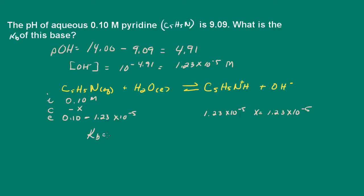So let's go ahead and set up our equilibrium expression here. And it's going to be the cation concentration times the hydroxide ion concentration divided by the concentration of pyridine.